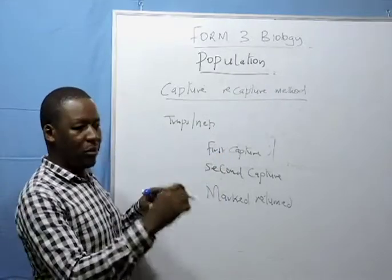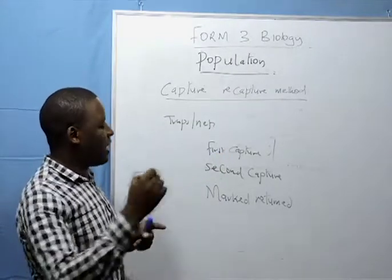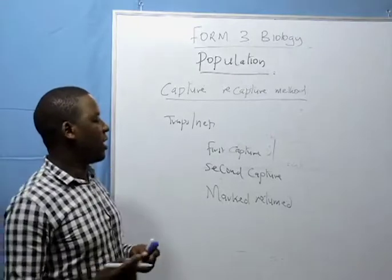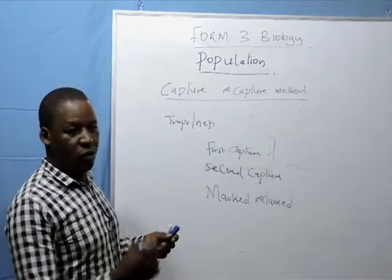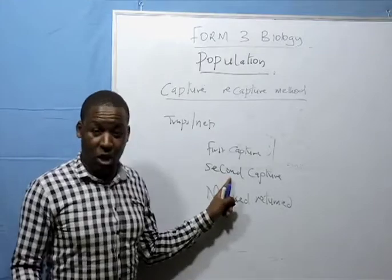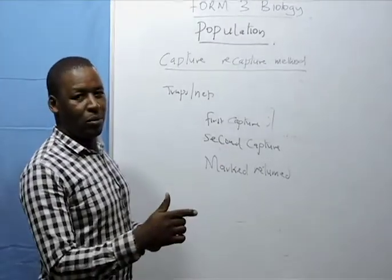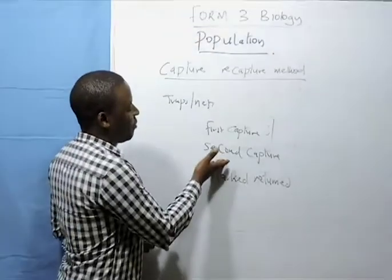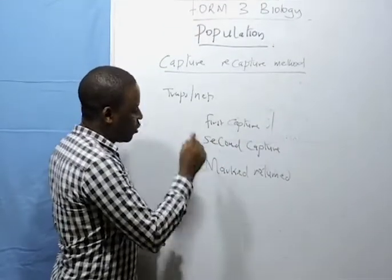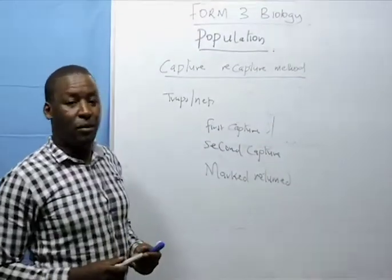We put a mark, marked, we release them into the environment. After 24 hours, we capture the fish, we count them, record them as second capture. Then out of the second capture, those that have a mark will be recorded as marked returned.